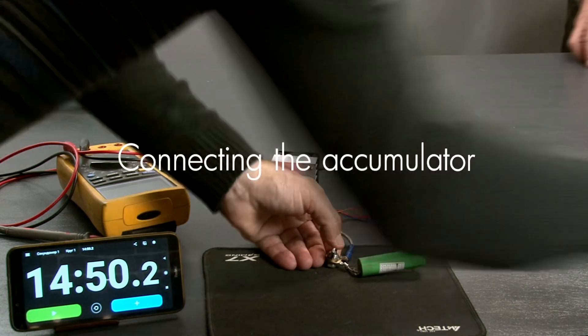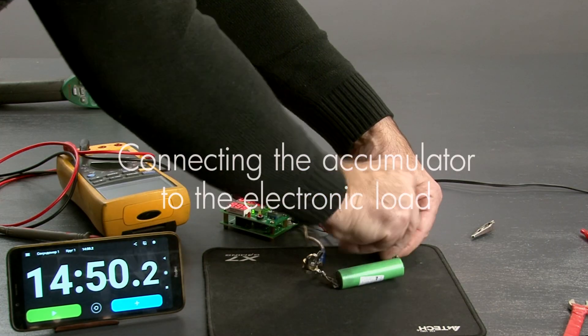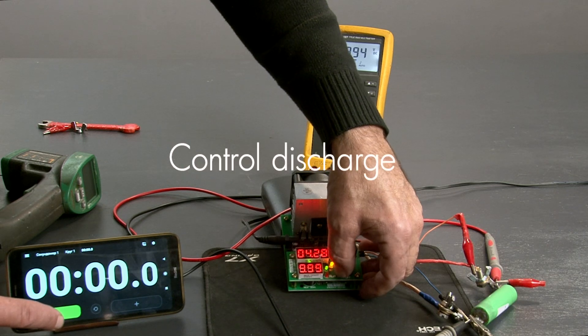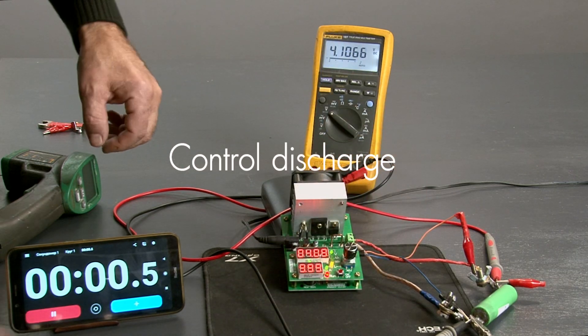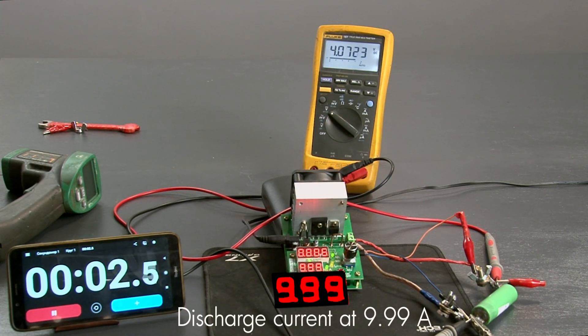Connecting the accumulator to the electronic load. Control discharge. Discharge current at 9.99A.